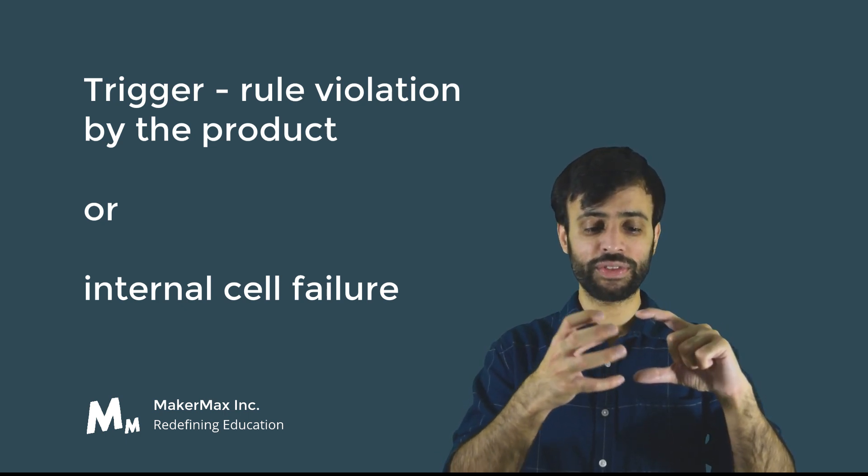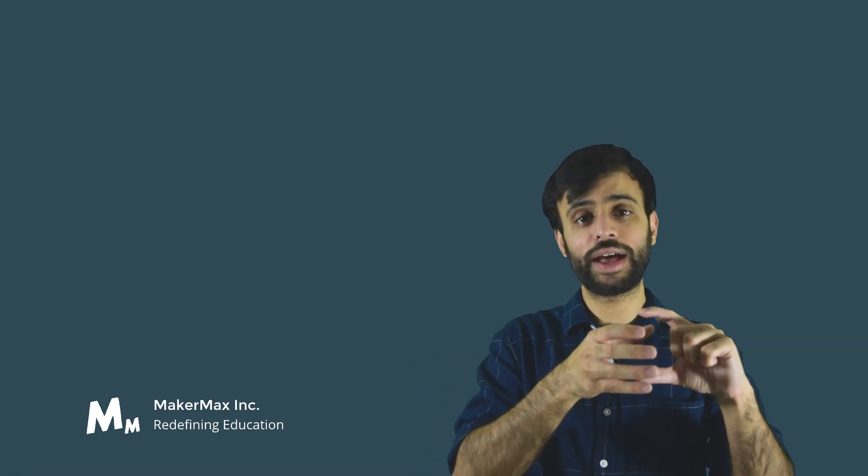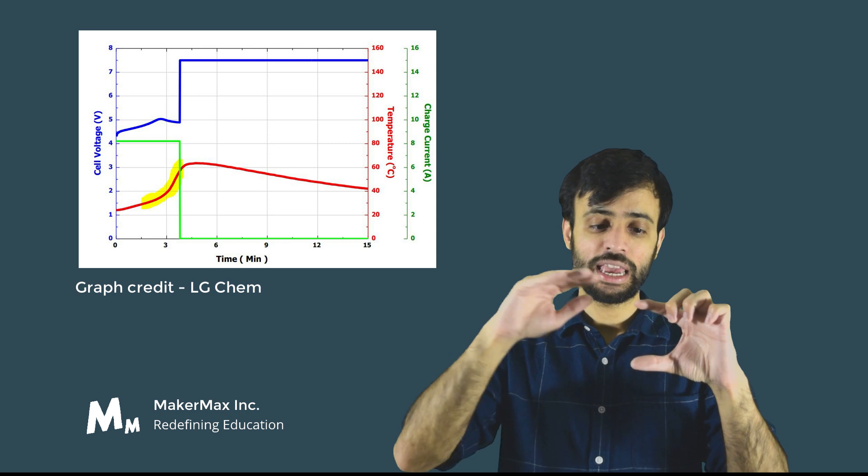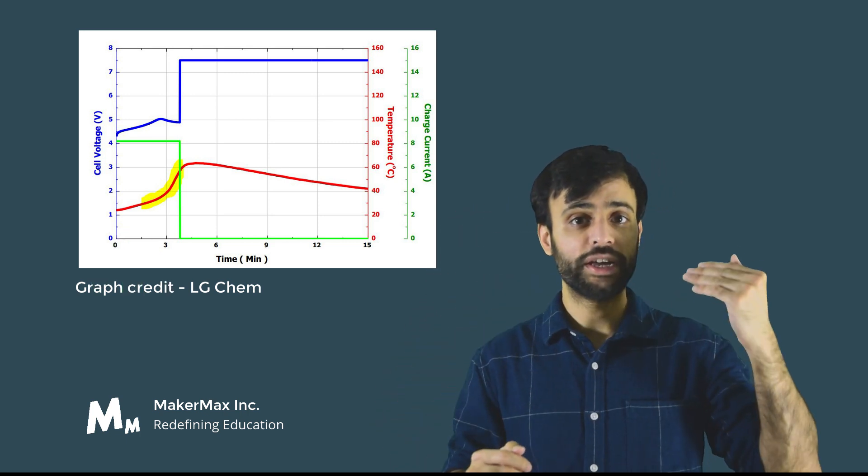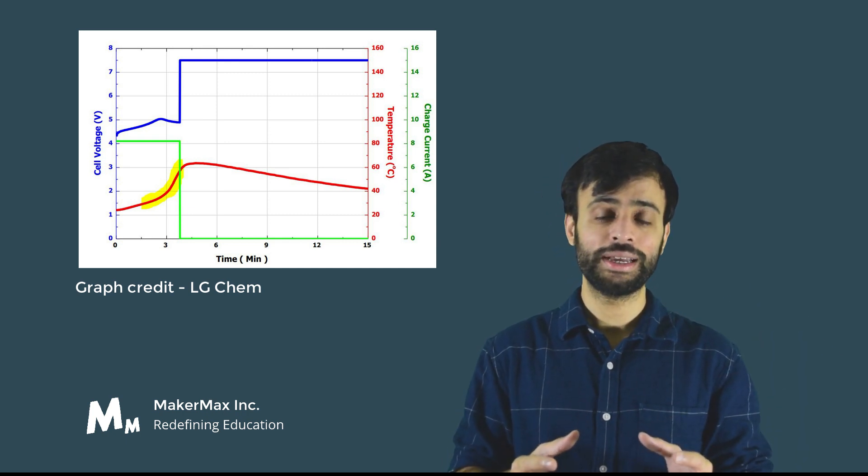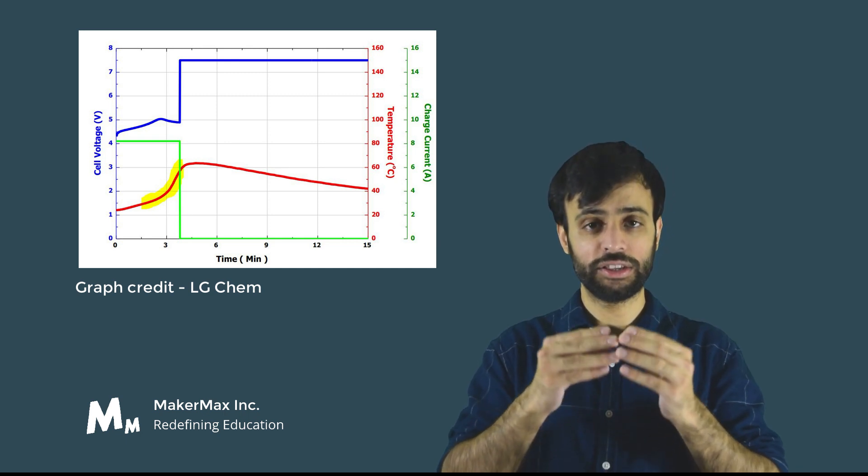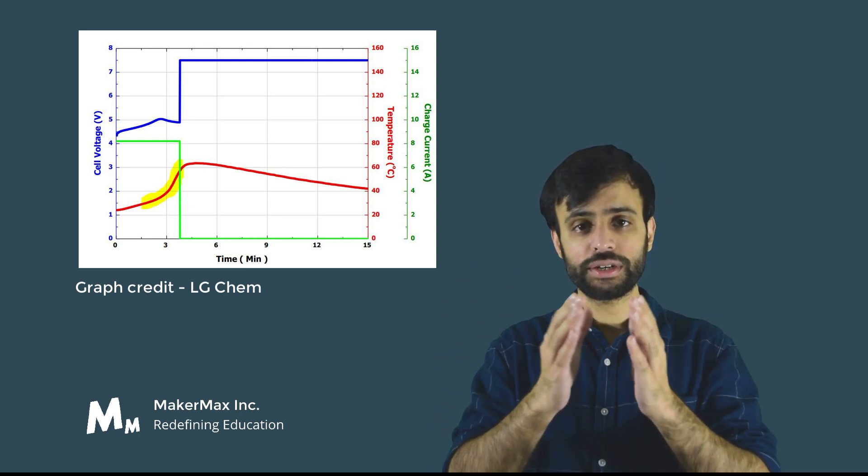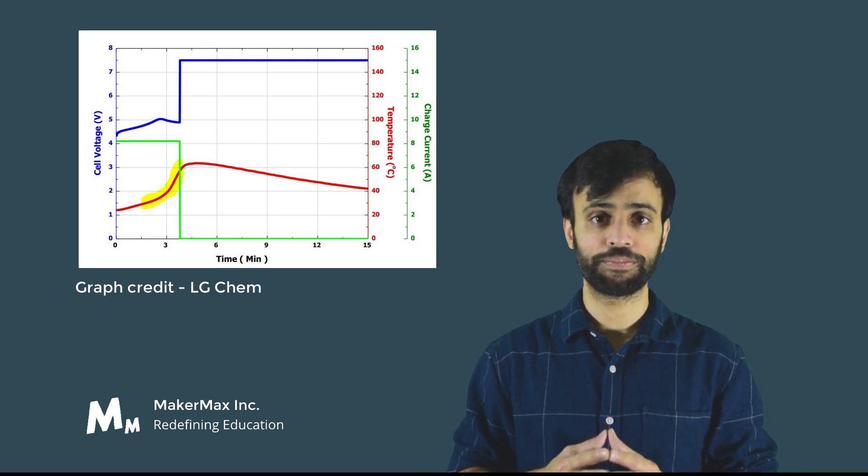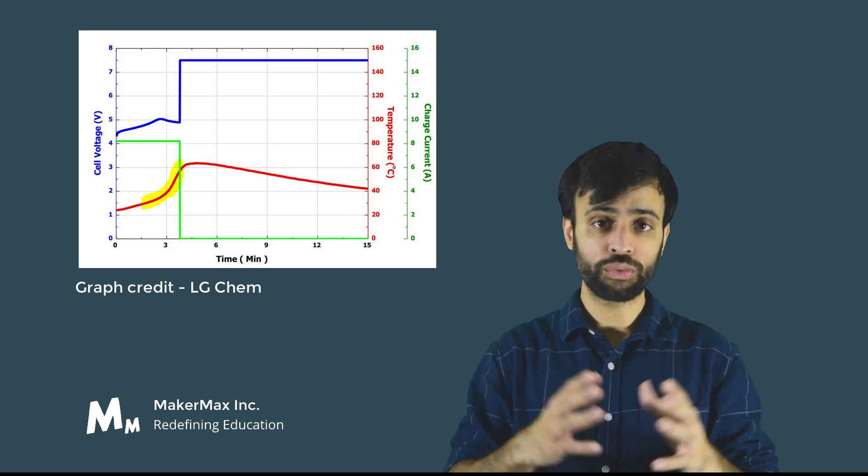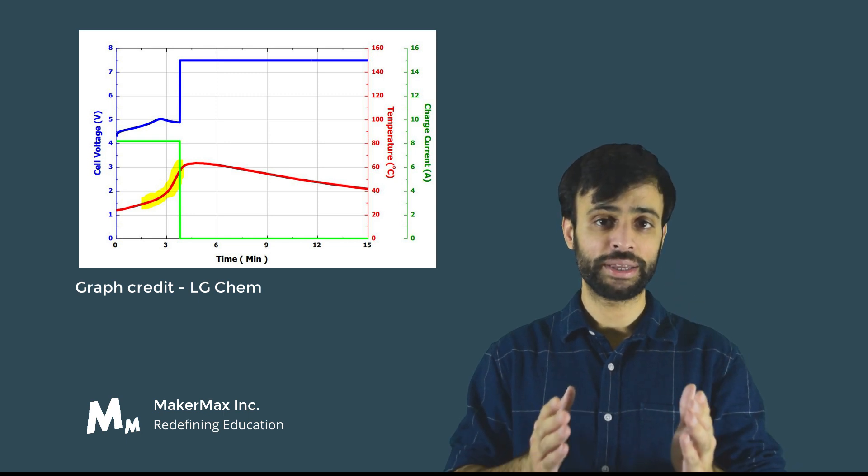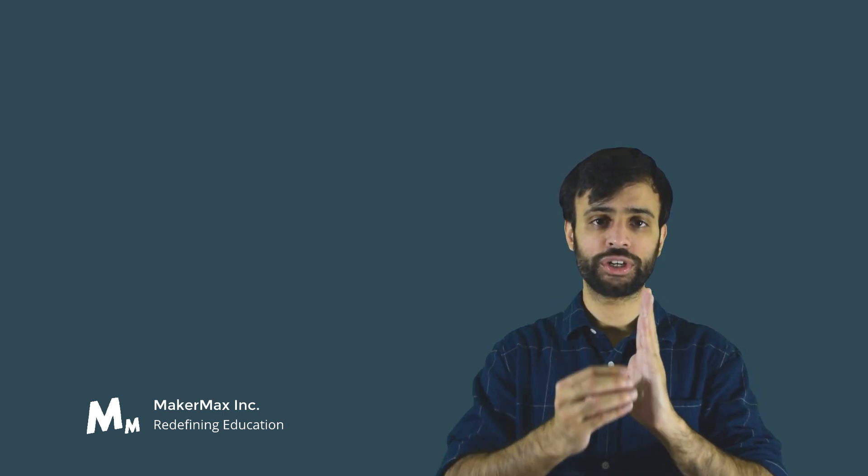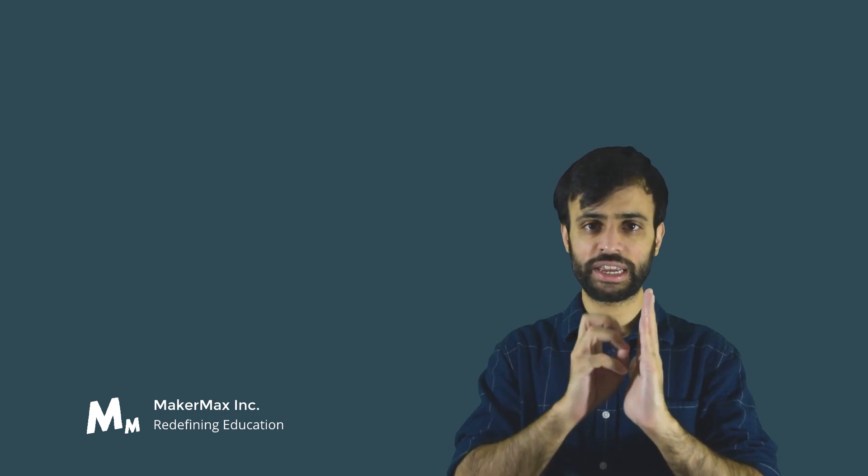Because of that heat being generated, if that heat cannot be removed as fast as it's being generated, then the temperature of that cell will rise. When the temperature rises beyond a certain point, that's when we start initiating stage one of thermal runaway. In stage one, certain reactions start happening inside the lithium-ion cell—the lithium starts combining with the electrolyte, and the electrolyte slowly starts vaporizing. These reactions are catalyzed by that higher temperature, which was caused by violating one of the rules governing the cell.